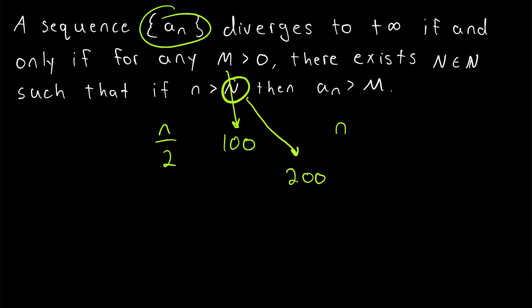And we found that as long as n was greater than 200, the nth term of the sequence would be greater than M. We could also easily adapt this definition to describe what it means to diverge to negative infinity.